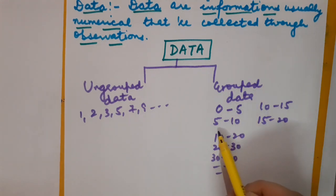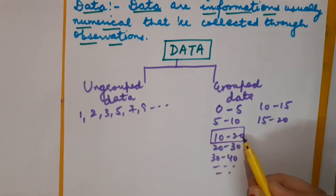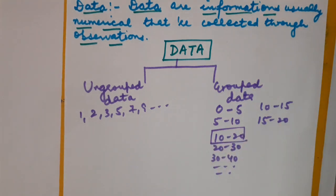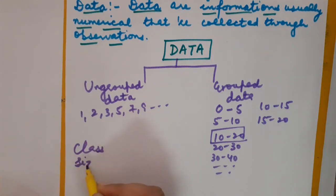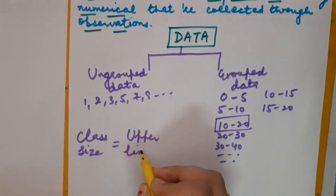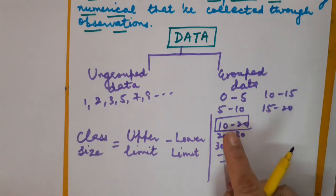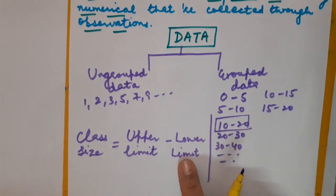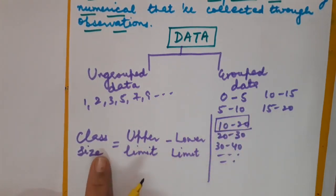In a class interval, the smaller number is known as the lower limit and the larger number is known as the upper limit. For example, in the interval 10 to 20, 10 is the lower limit and 20 is the upper limit. The difference between the upper limit and the lower limit is known as the class size. So, class size = upper limit minus lower limit.